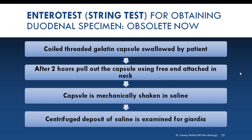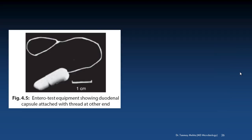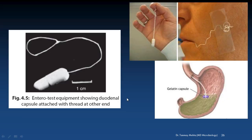The Entero test or string test is a useful method for obtaining duodenal specimens, although it is now obsolete. A coiled thread inside a small weighted gelatin capsule is swallowed by the patient after attaching the free end of the thread to the cheek. The capsule passes through the stomach to the duodenum, and after two hours the thread is withdrawn, placed in saline, and mechanically shaken. The centrifuge deposit of this saline is then examined for Giardia. The Entero test equipment showing the duodenal capsule attached with the thread is shown here, with one end of the thread secured with tape on the cheek.